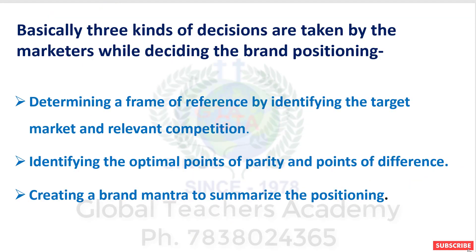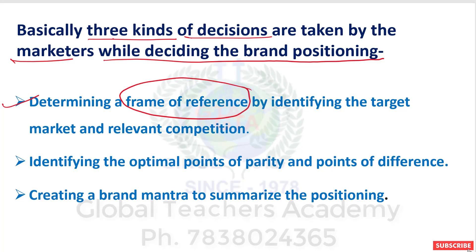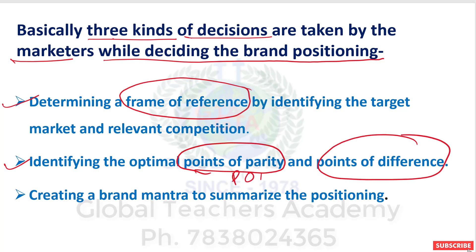There are three kinds of decisions taken by marketers while deciding brand positioning. First is determining a frame of reference by identifying the target market and relevant competition. Second is identifying the optimal points of parity and points of difference — POP and POD. Third is creating a brand mantra to summarize the position. These three decisions are taken by marketers while deciding brand positioning.